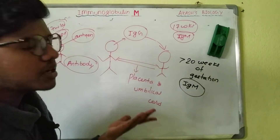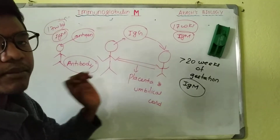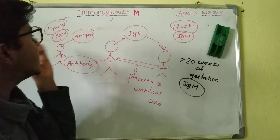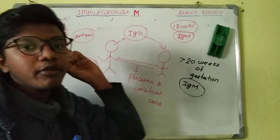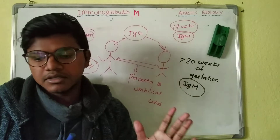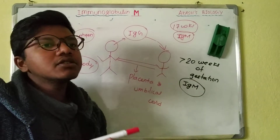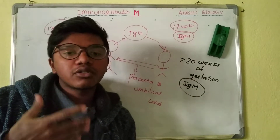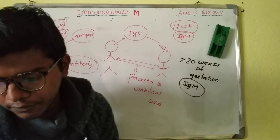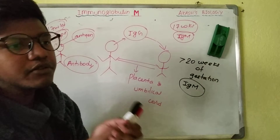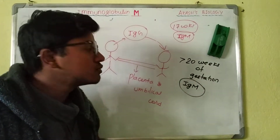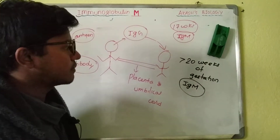Premature IgM in a fetus is therefore indicative of congenital infections such as toxoplasmosis, HIV, syphilis, rubella, measles, and mumps.